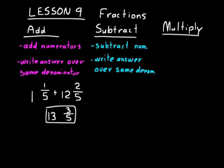Similar steps apply to subtracting fractions that have common denominators. For example, three-fifths minus one-fifth: first subtract the numerators, three minus one is two, then write the answer over the same denominator, five. So two-fifths is the answer.